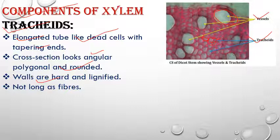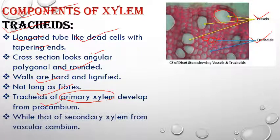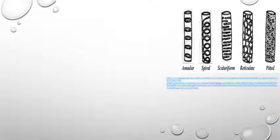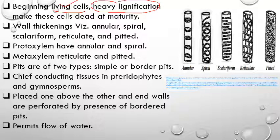Primary xylem tracheids develop from procambium — the embryonic cambium — while secondary xylem tracheids develop from vascular cambium. Initially when young, these cells are living and have protoplasm, but due to heavy deposition of wall-thickening material, at maturity they become dead cells.